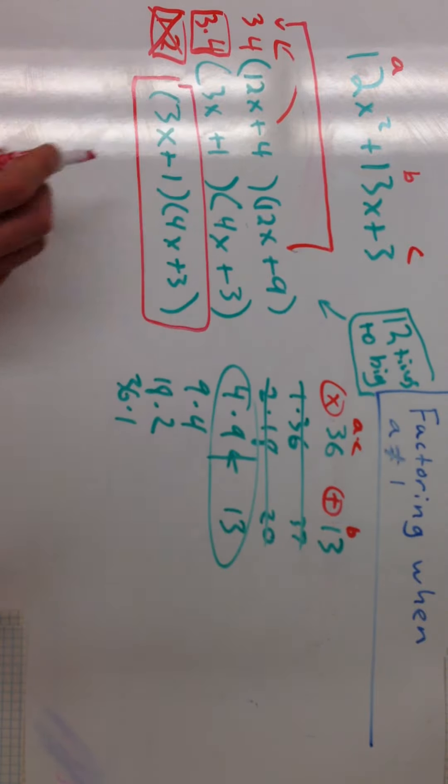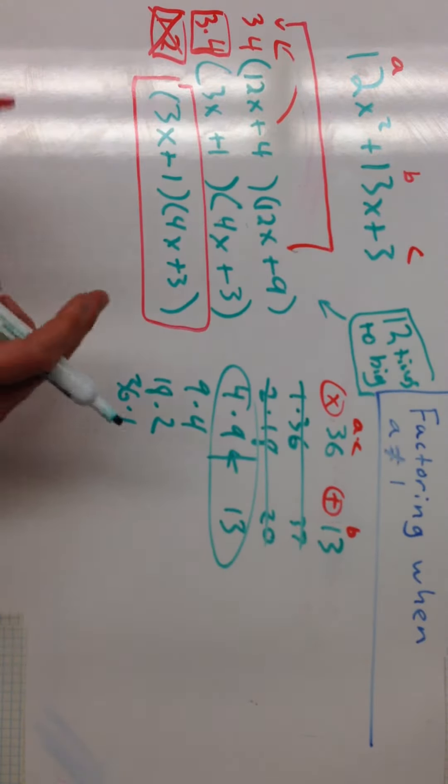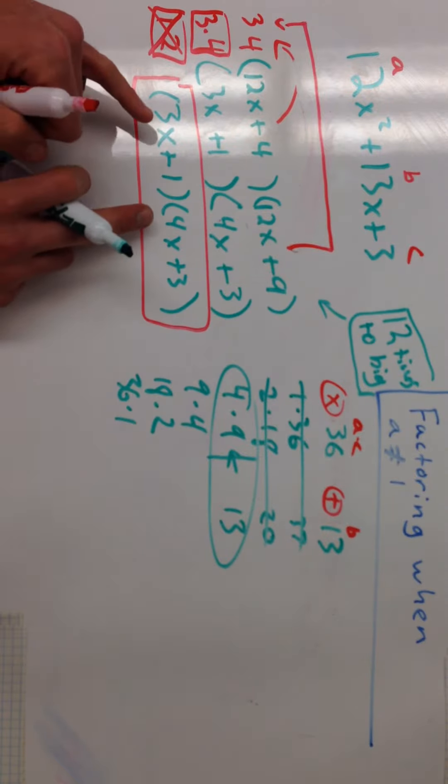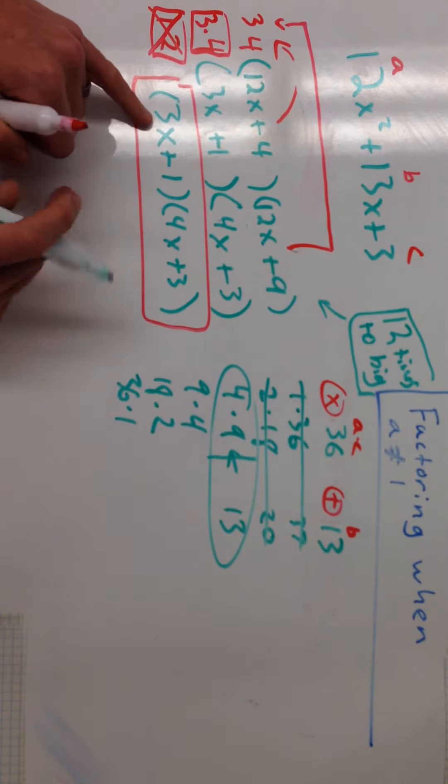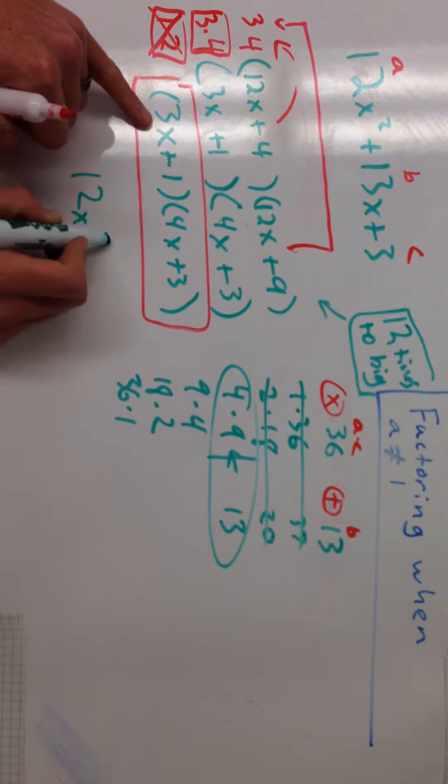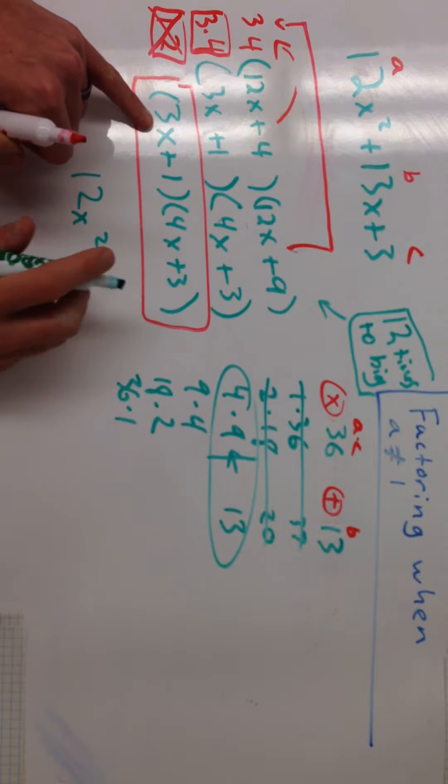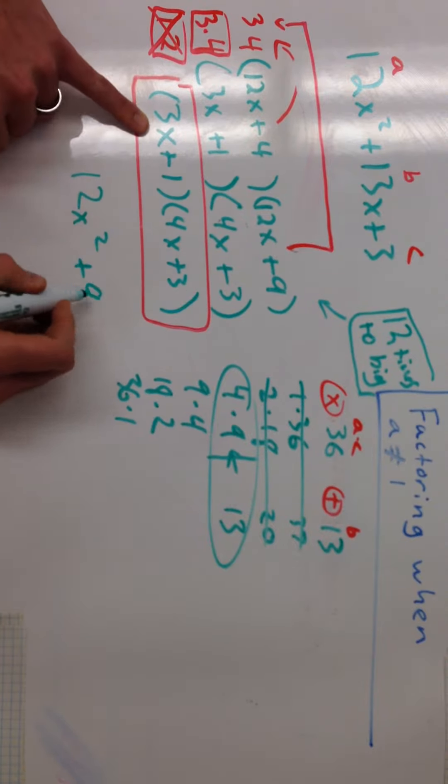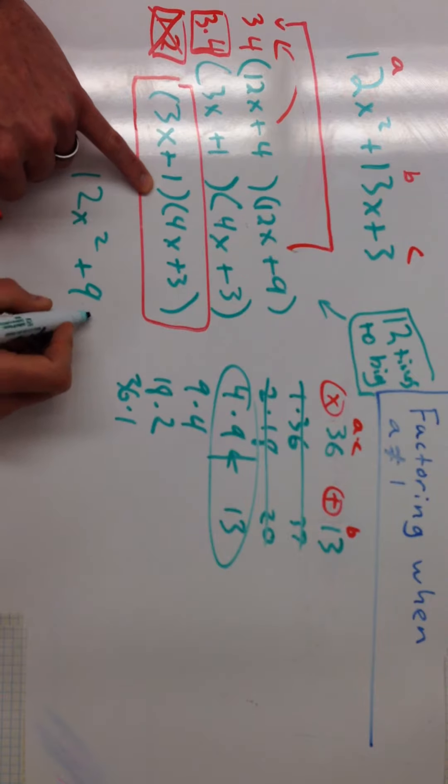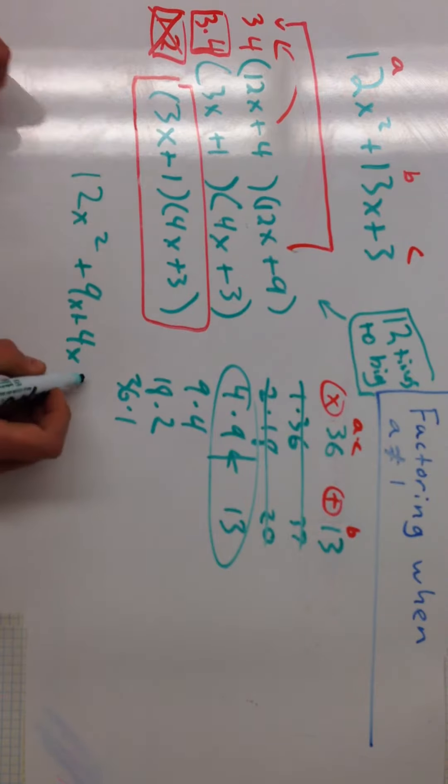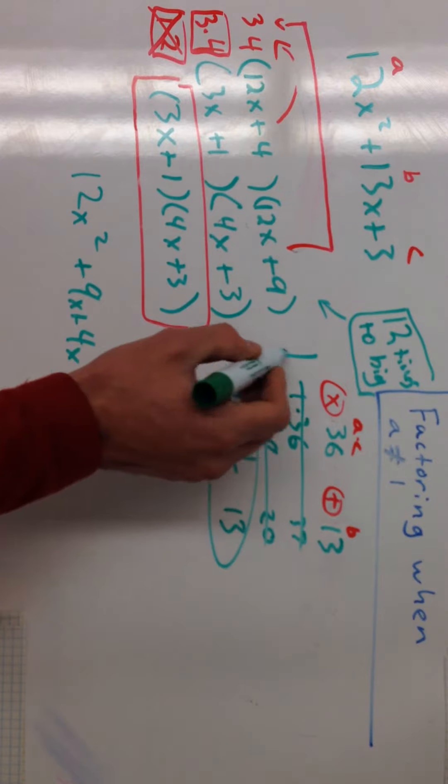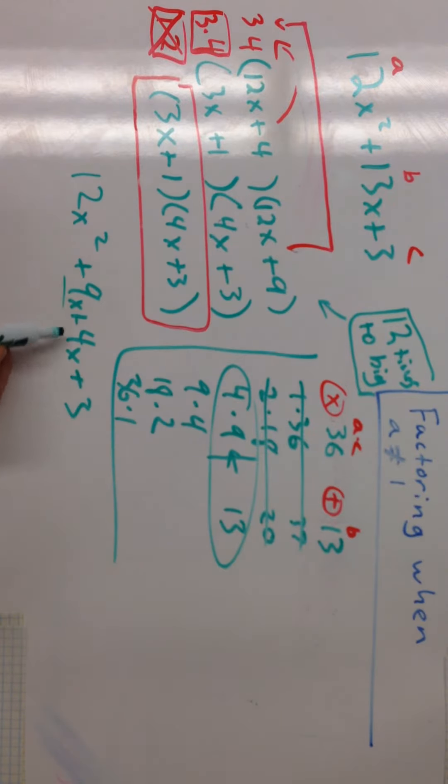Just like all these factor problems, we can multiply it back out to see if we got the right answer. 3x times 4x, 12x squared, good start. 3x times 3 is 9x. 1 times 4x, that'll be 4x. And that'll be 3. If I combine like terms here, these middle ones, I'll get 12x squared plus 13x plus 3. So I've got the exact same answer.